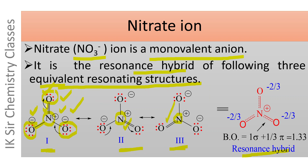Since these resonating structures are equivalent, they contribute equally to the resonance hybrid. The nitrogen-oxygen bond order consists of one sigma bond and one pi bond that is delocalized over three positions; hence at one position the pi bond order is one-third, giving an overall nitrogen-oxygen bond order of 1.33.